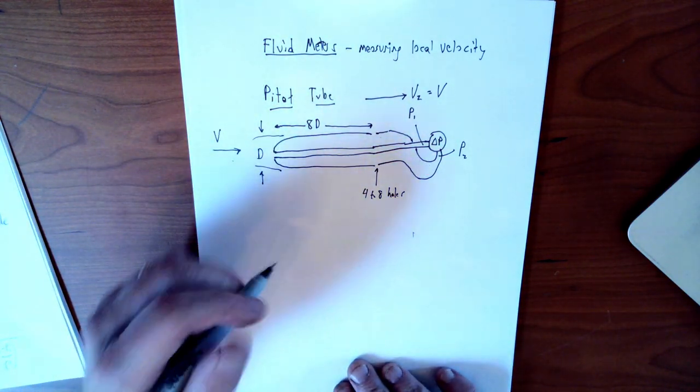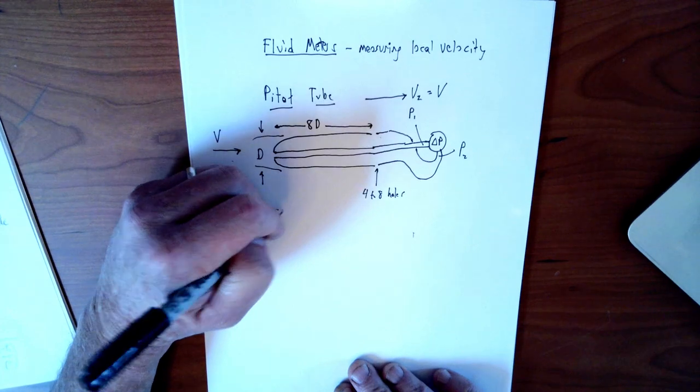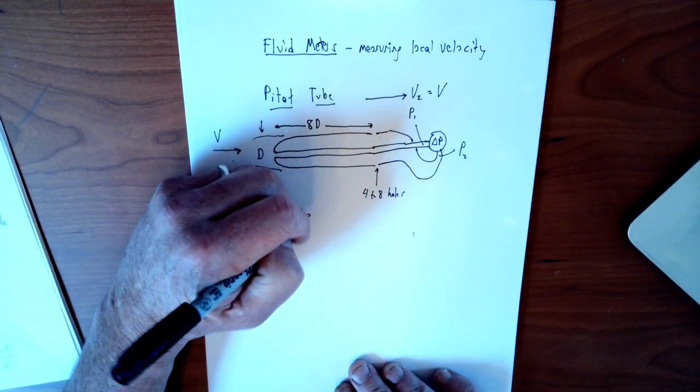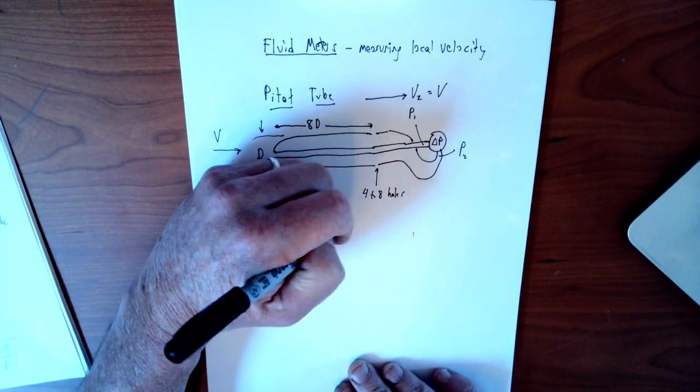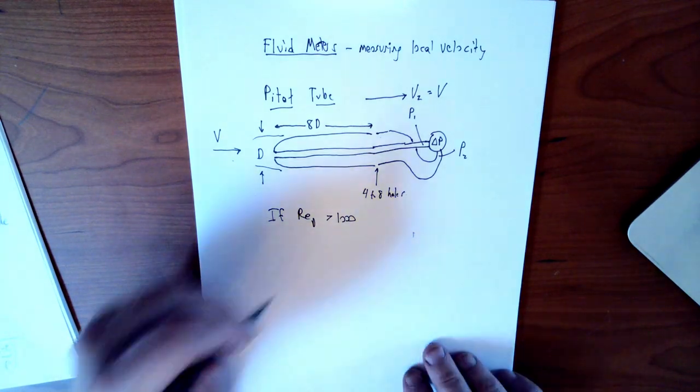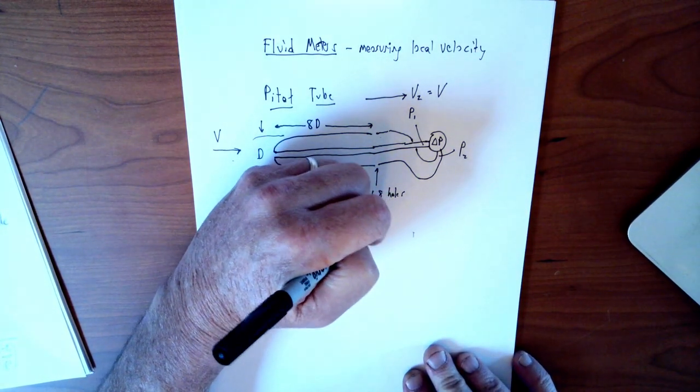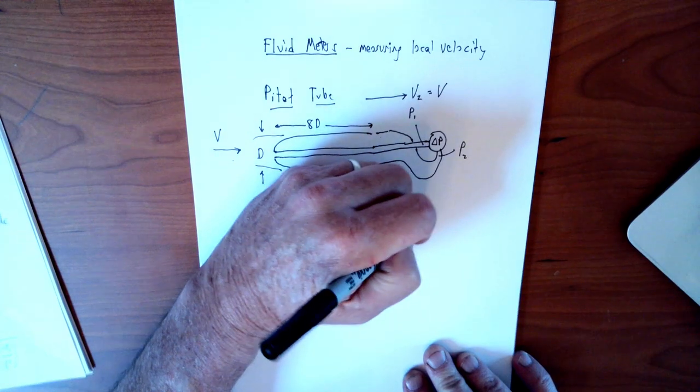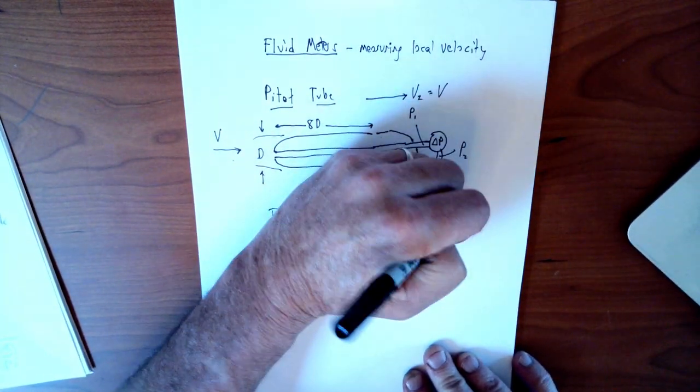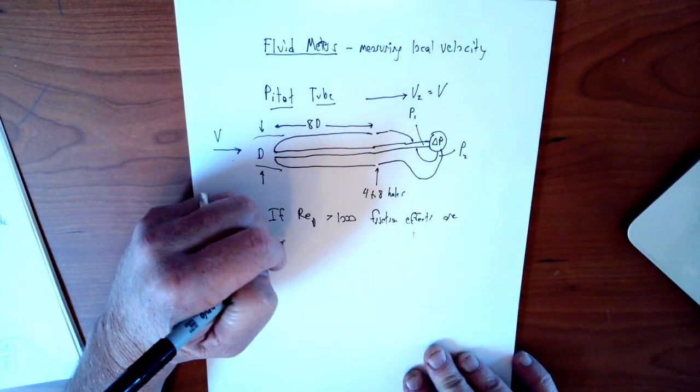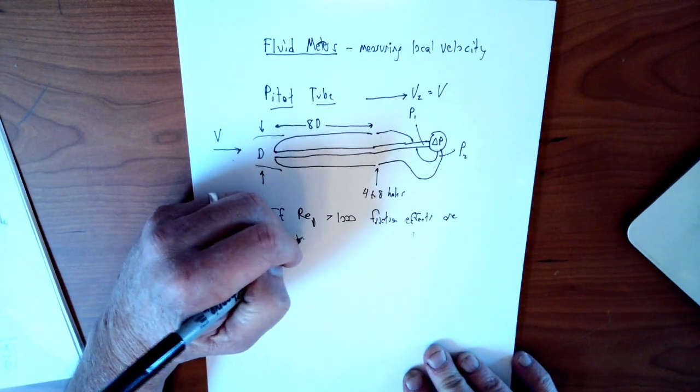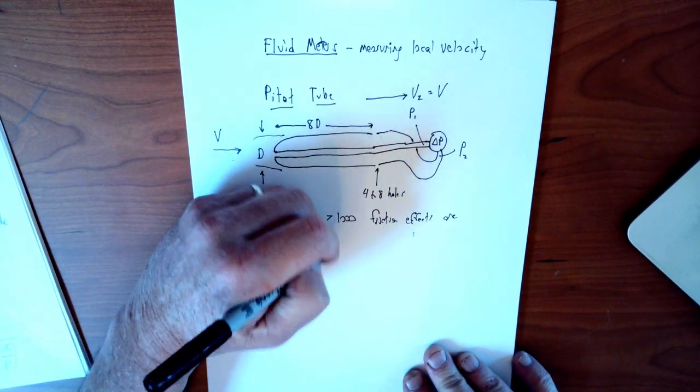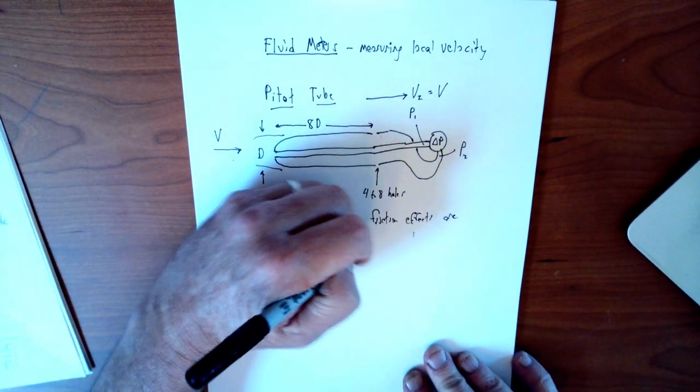It has been found that if the Reynolds number of the flow based on the diameter is greater than about a thousand, that this will be a relatively good method. So the friction effects will be relatively negligible and Pitot will be accurate.